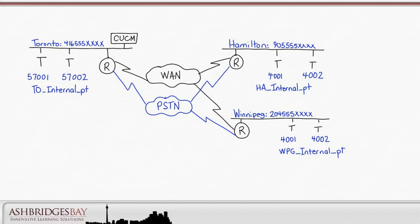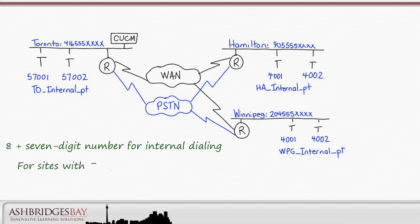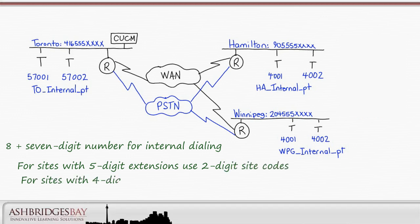We'll try to make dialing natural and intuitive. We'll use 8 plus a 7-digit internal number for inter-site calling — 7-digit numbers are natural and easy for people to understand. Where we have 5-digit extensions, we'll use 2-digit site codes. Where we have 4-digit extensions, we'll use 3-digit site codes.